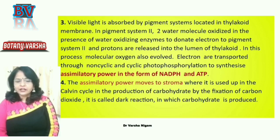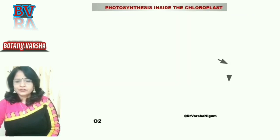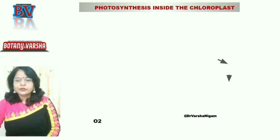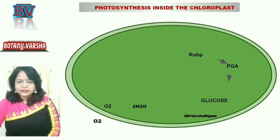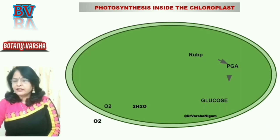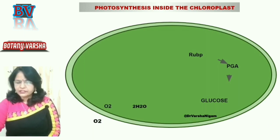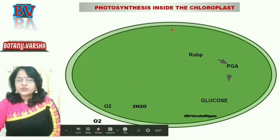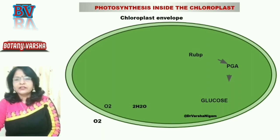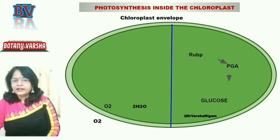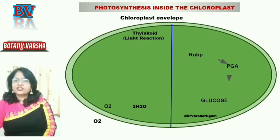Now let's look at photosynthesis inside the chloroplast using a diagram. Chloroplast is a double-membranous structure — this is the outer membrane, and this is the inner membrane. The space between the two membranes is called the intermembrane space, also referred to as the chloroplast envelope. The chloroplast is divided into two functional parts: the thylakoid, where the light reaction takes place, and the stroma, where the dark reaction takes place.